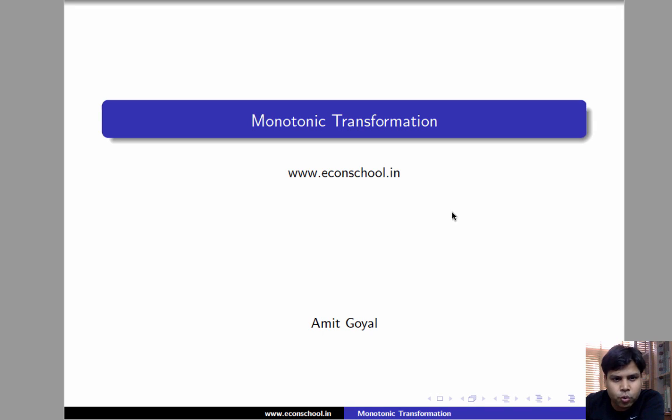Hi, in this video we'll learn an important property of the optimization problem. If you want to take the monotonic transformation of the objective in a maximization problem and solve another problem with the transformed objective, then the solution remains unaffected.